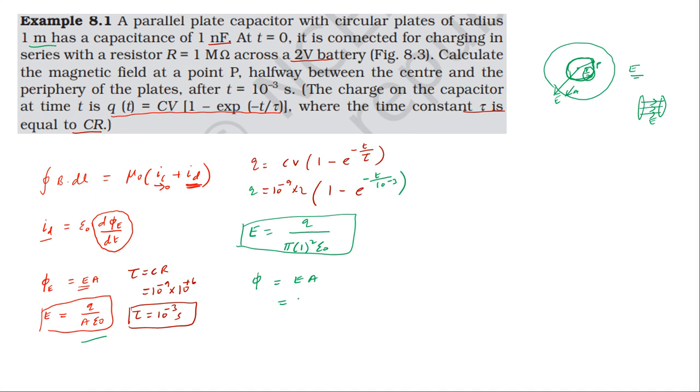The electric flux is equal to the electric field into the area pi R squared, with R being the radius at the center.